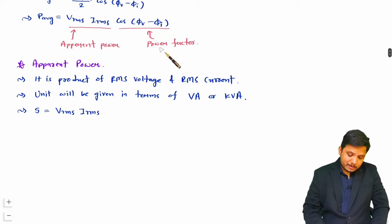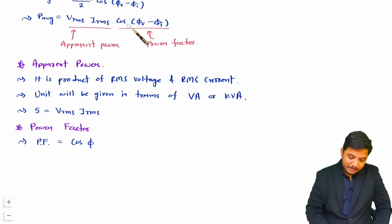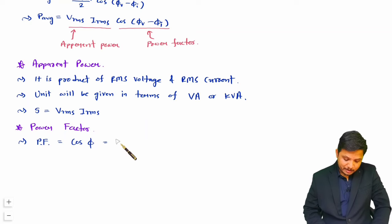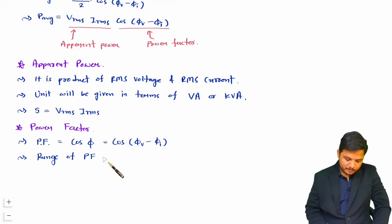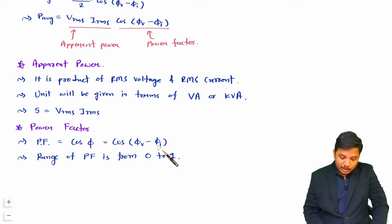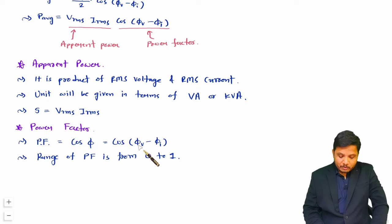Power factor is simply cos(φ), where φ is the phase difference between voltage and current — that is, φV − φI. The range of power factor is between 0 and 1. Note that cos(φV − φI) is always positive. However, the sign of φV − φI determines the type of power factor — whether leading or lagging.